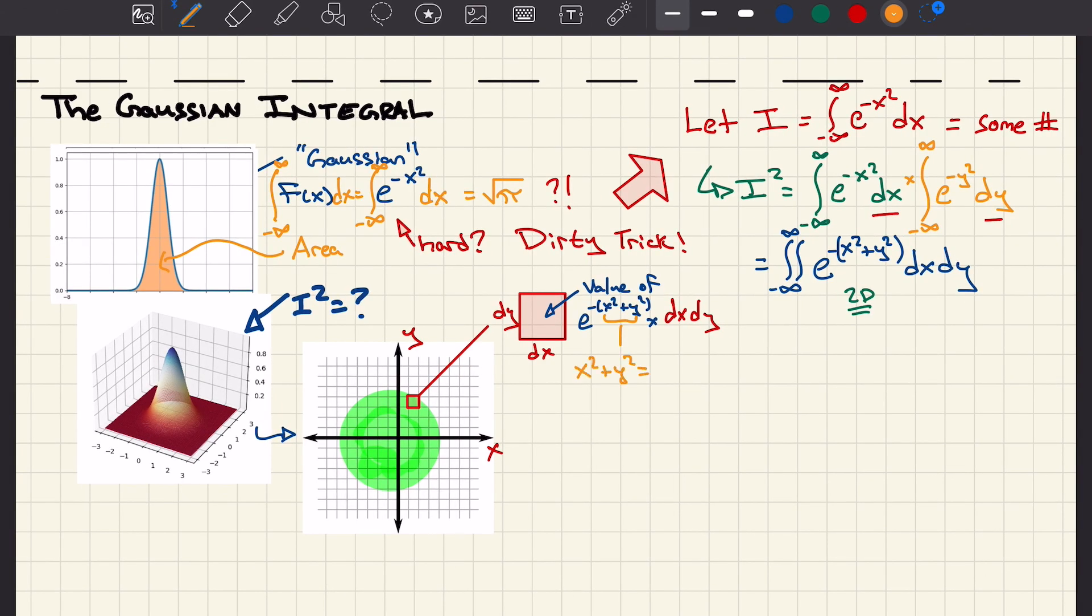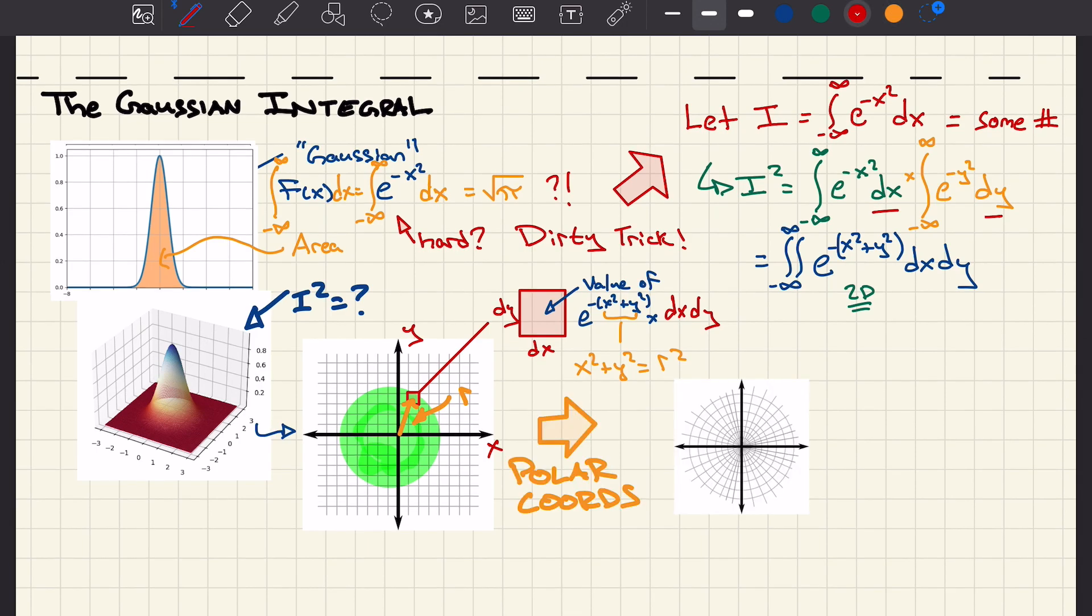Now we notice something about this plot. The quantity x squared plus y squared is the distance from the origin squared, r squared. Really in this picture it's a function of one variable, and we're going to use polar coordinates to do this.